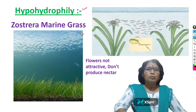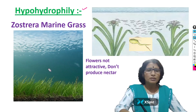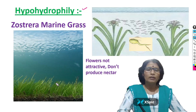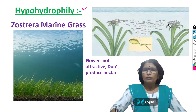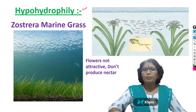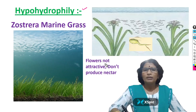Hypohydrophily means pollination takes place inside the water. The example is Zostera marine grass, which grows at a low level of sea water. Inside the water, the pollen grains are released. This is the clear view of one single pollen grain — it is somewhat ribbon-shaped and lengthy. It can easily move passively with the water currents and reach another flower. In this way, pollination is completed inside the water. Usually in hydrophily, flowers are not attractive and do not produce nectar.